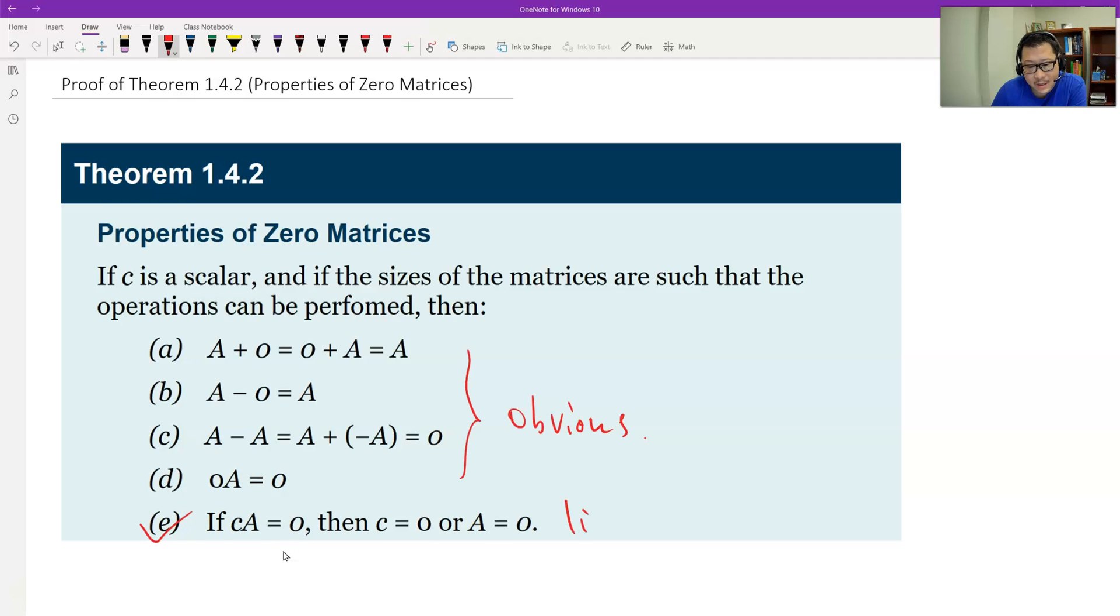E is like zero product. A times B, two number times together equals zero number. And then either one is zero, right? So like a C, a scalar number times a matrix equals zero matrix. So either the matrix, either the scalar number C is zero, zero scalar number, or the matrix A is a zero matrix.